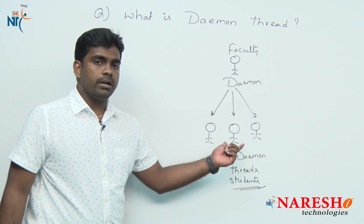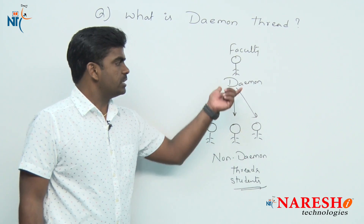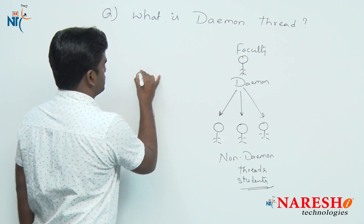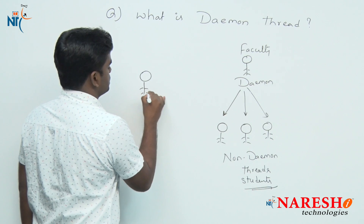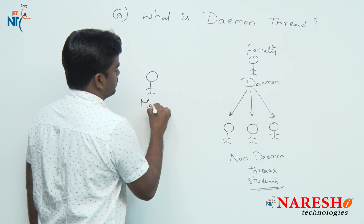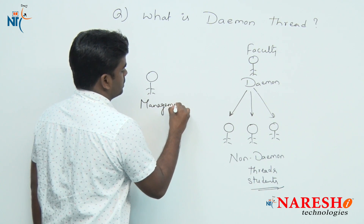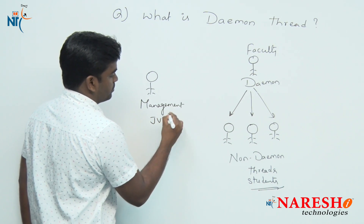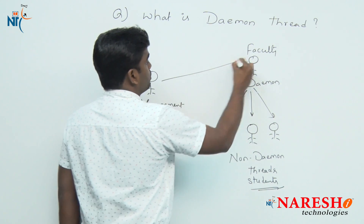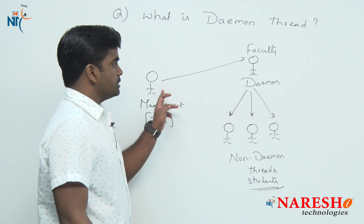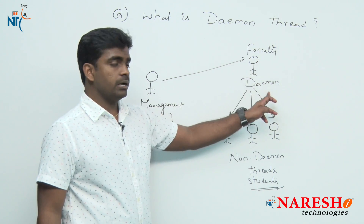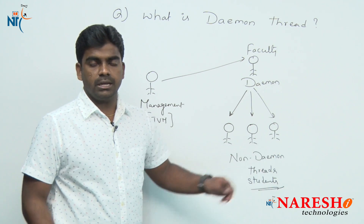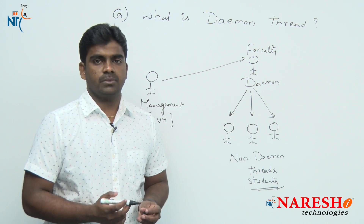If there are no non-daemon threads, what is the use of a daemon thread? JVM will stop. JVM is just like the management. Management — just like JVM — will stop the faculty, meaning it will stop the daemon thread if there are no non-daemon threads in any institute or college.